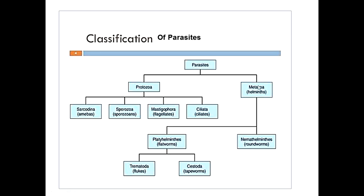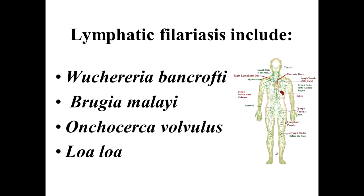We are in the metazoa category again. You already know some of the intestinal nematodes, but today we are going to discuss the tissue nematodes. The disease produced by these tissue nematodes is called lymphatic filariasis because it affects the lymphatic system. The tissue nematodes include Wuchereria bancrofti, Brugia malayi, Onchocerca volvulus, and Loa loa.